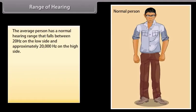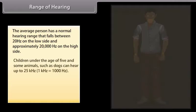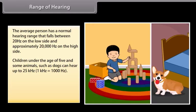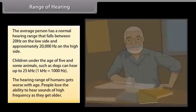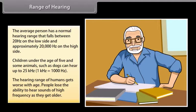Range of hearing. The average person has a normal hearing range that falls between 20 hertz on the low side and approximately 20,000 hertz on the high side. Children under the age of five and some animals such as dogs can hear up to 20 kilohertz. The hearing range of humans gets worse with age. People lose the ability to hear sounds of high frequency as they grow older.